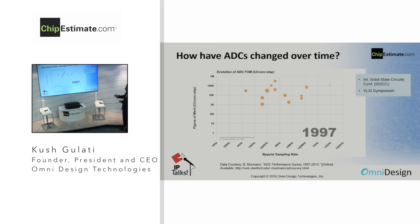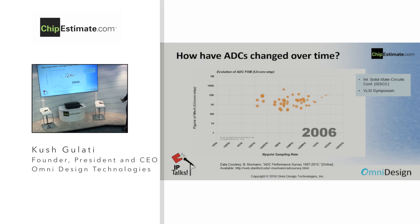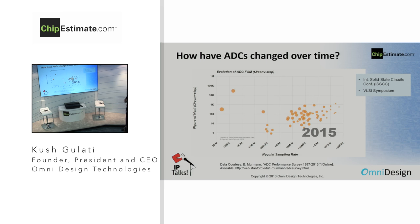We're going to play a short video incrementing through the years and observe how these bubbles change over time — essentially tracking the state of the art in ADC research. As the years go by, we expect these bubbles to move downward — figure of merit improving over time — and also move to the right, meaning people are pushing the sampling rate higher. There are a couple of dots on the left-hand side which turn out to be extremely high-resolution ADCs, 120 dB SNR types, but for the most part, people are trying to push the sampling rate higher and higher.